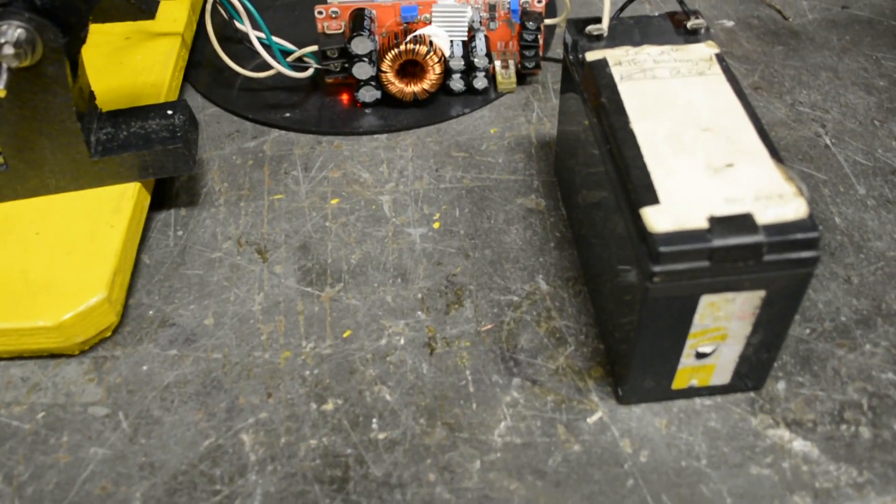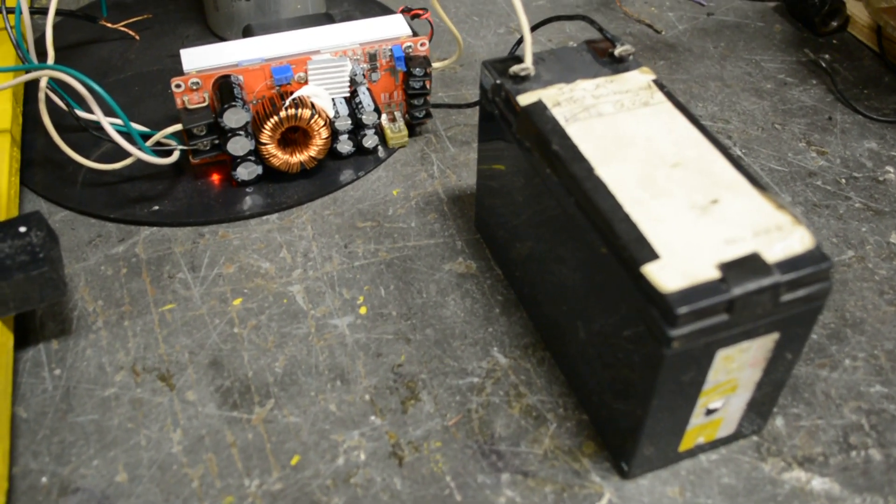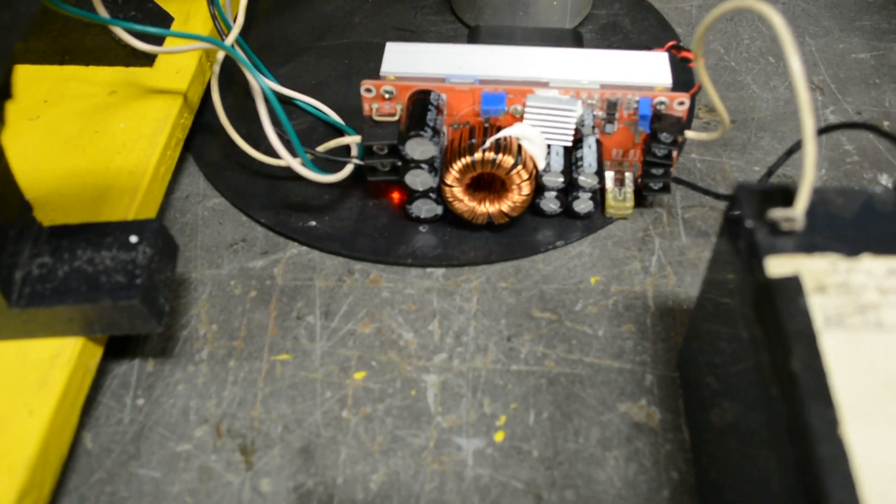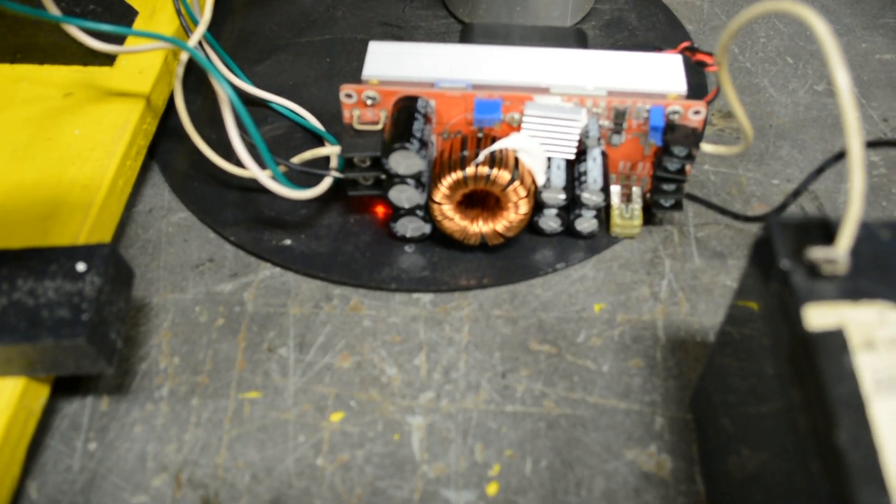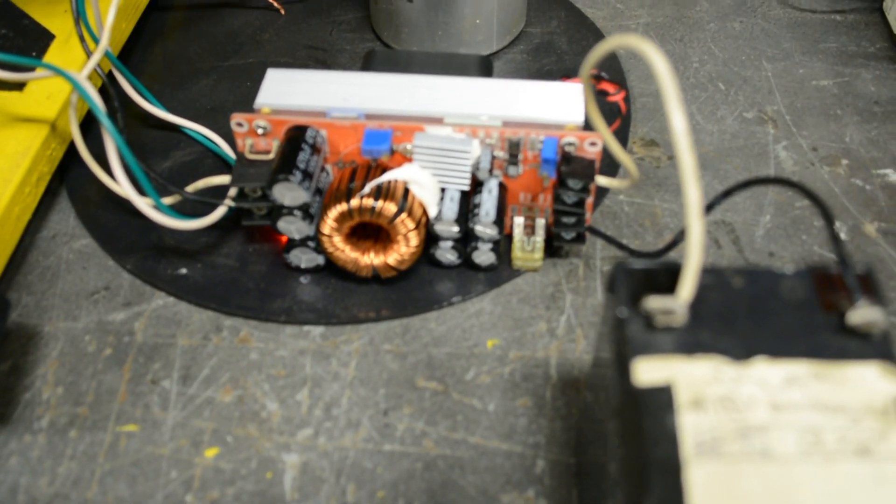Here we have a standard 12-volt dry cell going through an over-the-counter DC boost, taking the 12 volts, making it 50, and from there...